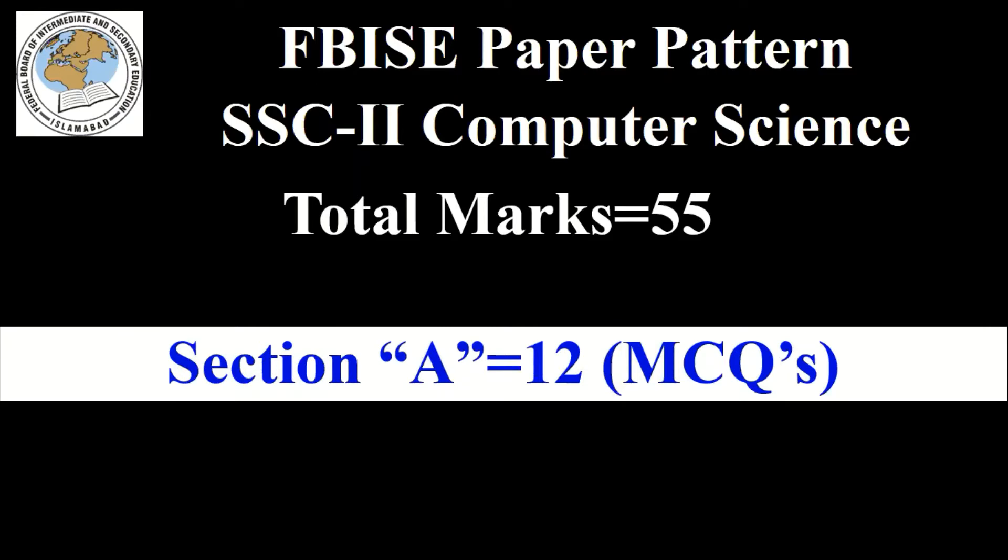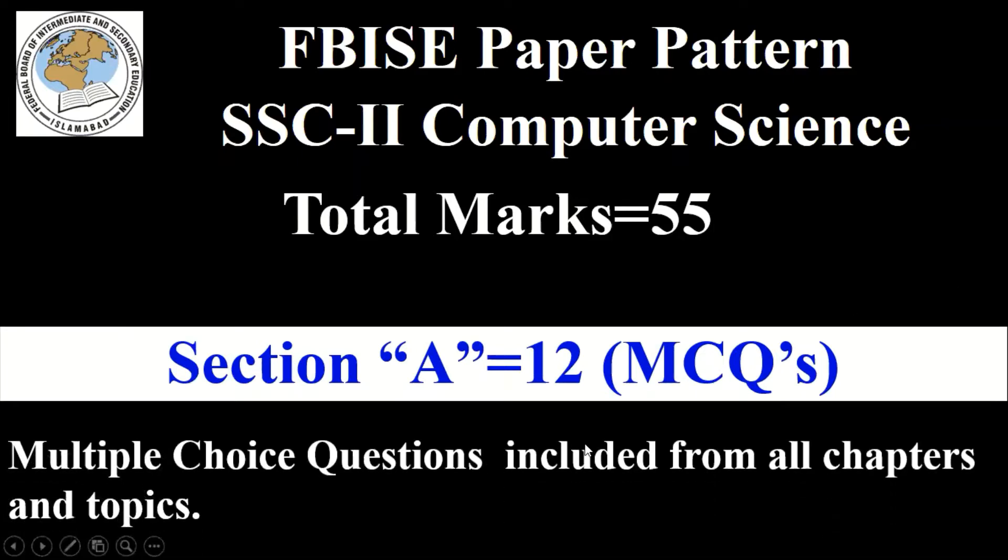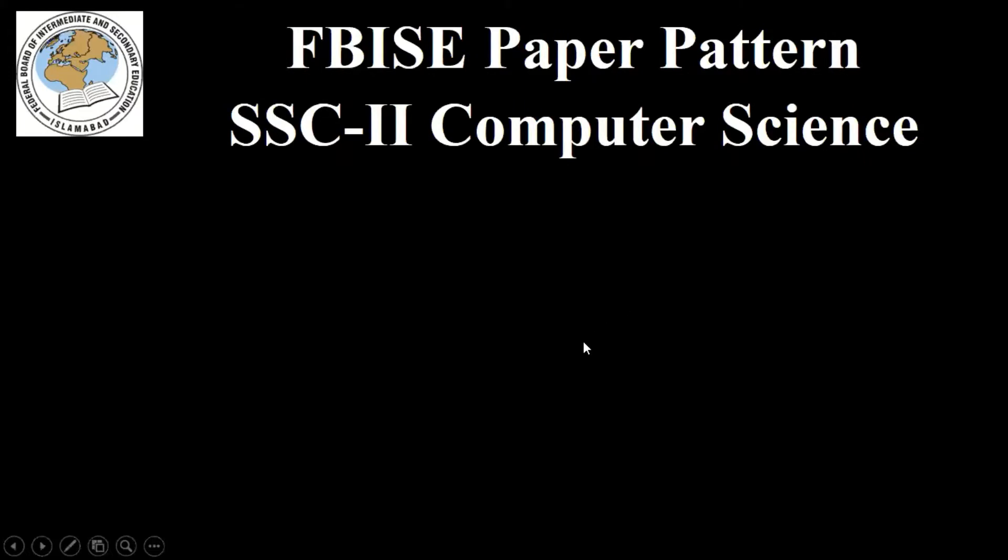Section A has 12 marks and Section A covers MCQs. MCQs are included from all the chapters and topics - multiple choice questions included from all chapters and topics. They are not only from the exercises given in each chapter, but they could come from any topic. So it has 12 marks in Section A. Let's move towards the next section.